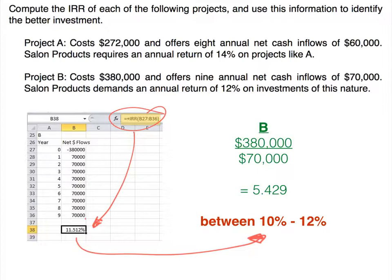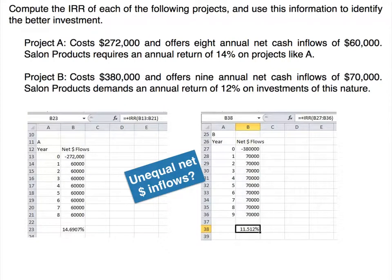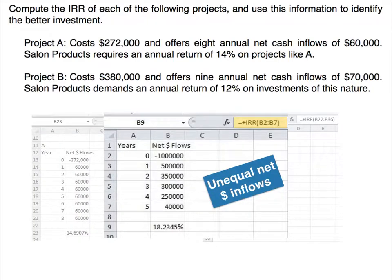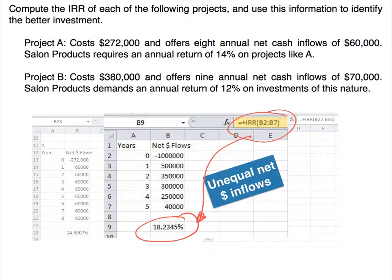Both Projects A and B had equal cash inflows — they were annuities. But what if they have unequal cash flows? Excel makes that very easy. We use the same process: set up a spreadsheet with unequal cash flows, enter the same IRR formula in our cell, and it spits out the exact internal rate of return for an initial investment of one million dollars with five unequal cash inflows.